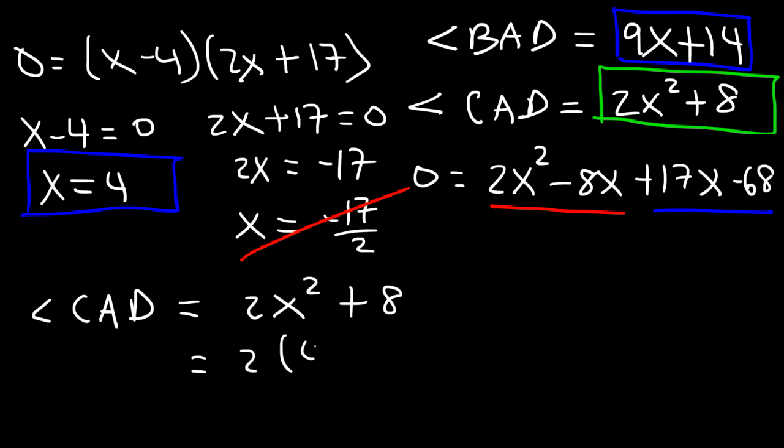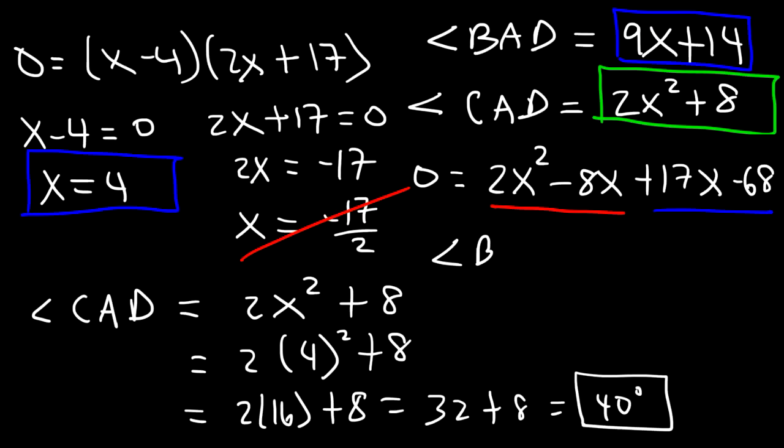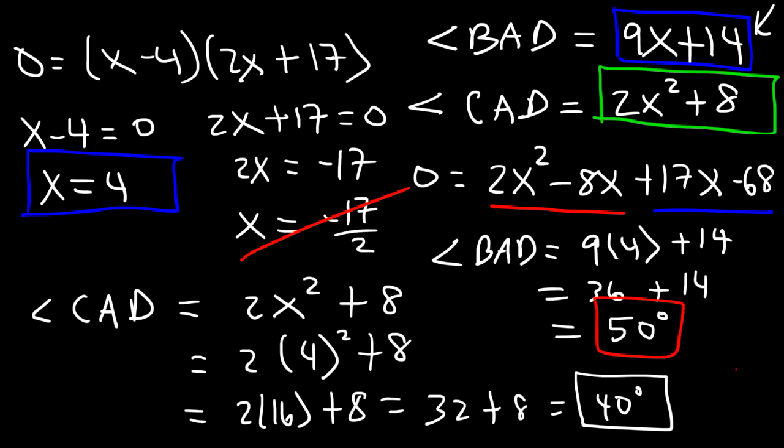So now that we have the value of x, we can find angle CAD, which is the goal of the problem. We know angle CAD equals 2x squared plus 8. So now let's replace x with 4. 4 squared is 16, and 2 times 16 is 32. And so we have 32 plus 8, which is 40. Now, if we want to find angle BAD, we just got to plug in 4 into 9x plus 14. So that's 9 times 4 plus 14. 9 times 4 is 36, 36 plus 14 is 50. So you can check your work this way and make sure you have the right answer. As we said, AB and AC were perpendicular rays, so they have to form an angle of 90. And these two angles, they add up to 90. But the answer that we're looking for in this problem was the measure of angle CAD. So the answer is 40 degrees.